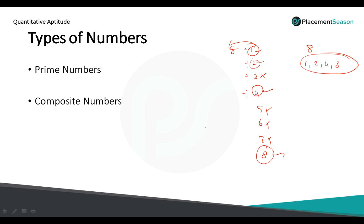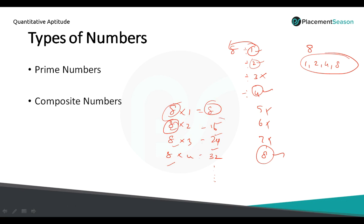Now let's discuss multiples. Take the number 8. Multiplying 8 by 1, 2, 3, 4 and so on gives us 8, 16, 24 and 32. So 8, 16, 24 and 32 are multiples of 8. In other words, 8 is a factor of 8, 8 is a factor of 16, 8 is a factor of 24 and 8 is a factor of 32. We can also say 8 is a multiple of 1, 2, 4 and 8, or that 1, 2, 4 and 8 are the factors of 8.